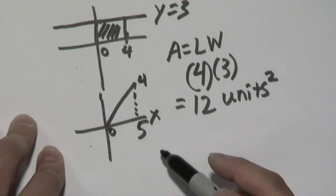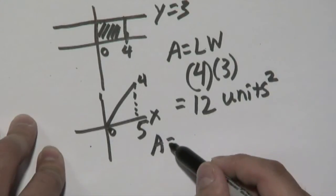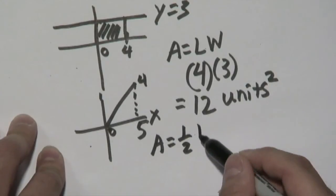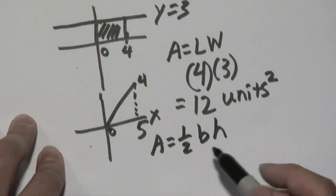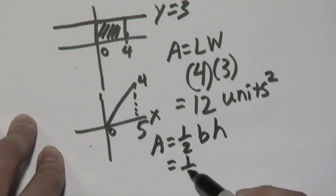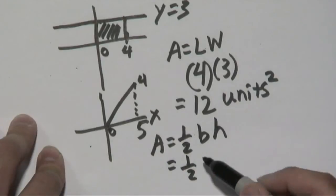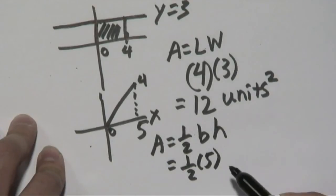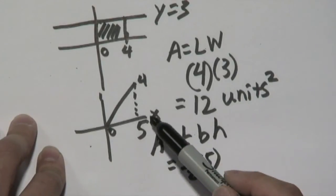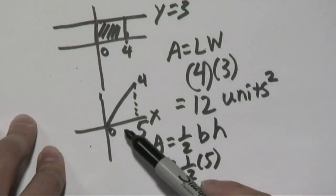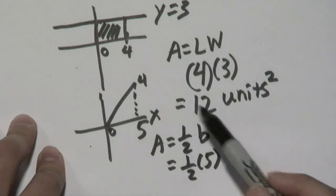Since this is a triangle, you know area is 1 half times base times the height. The base is from 0 to 5, so that means it's 5 units, and hypothetically, the height, since we ended at 4, is from 0 to 4.